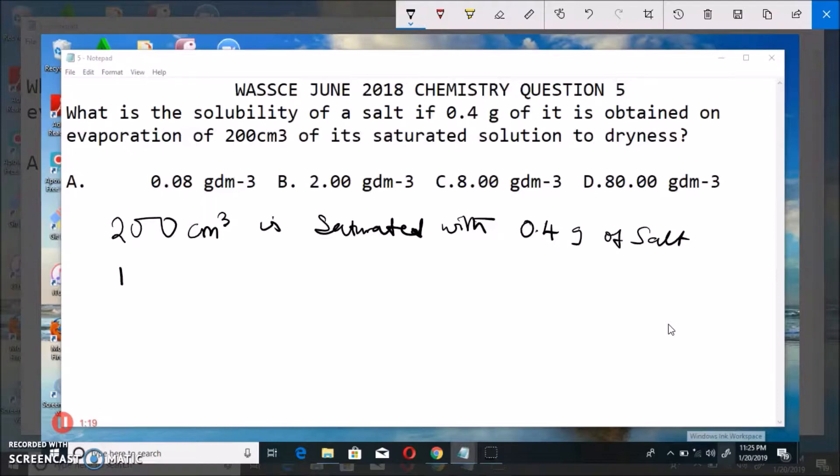Now, noting that we cannot say that 1000 cm³ or 1 dm³, which is actually what we will take when we are talking about solubility, will be saturated by x gram. So now, this very x gram that is going to give us solubility, if you cross multiply,